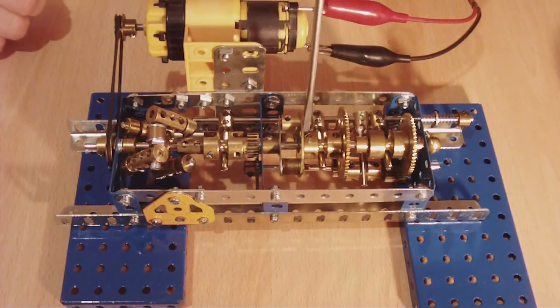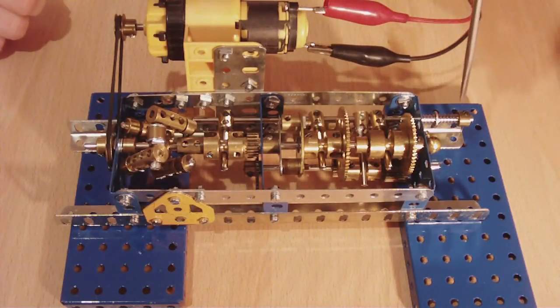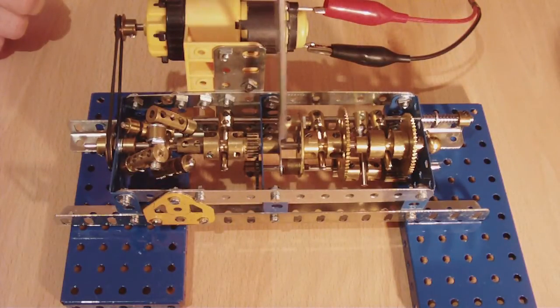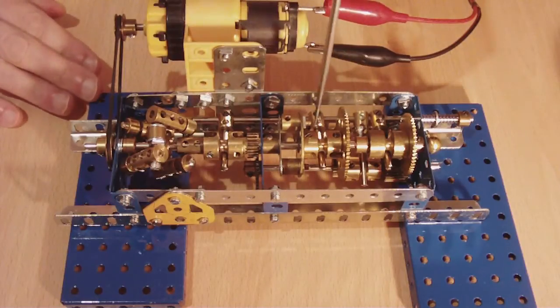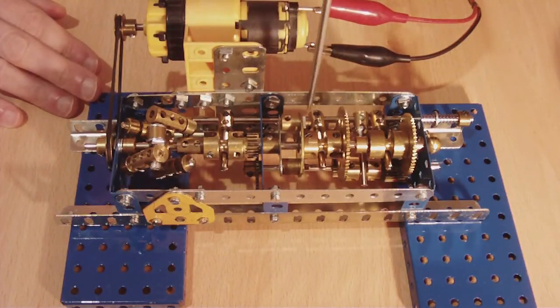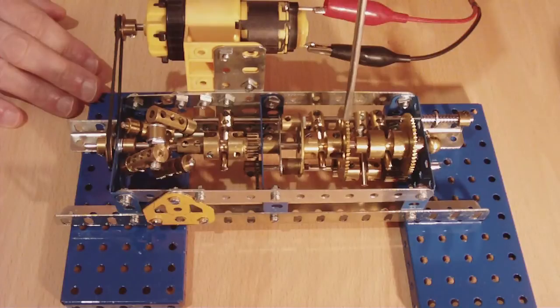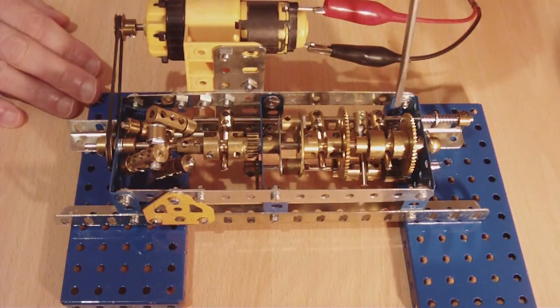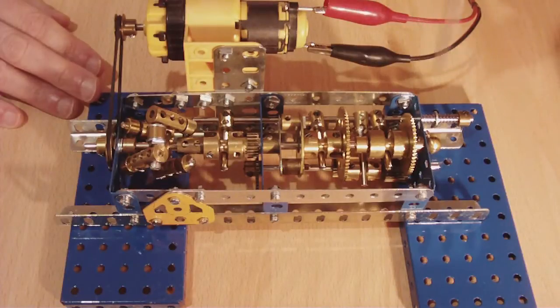At very low speeds it doesn't drive the output at all because this dog clutch arrangement doesn't engage. But as it speeds up that dog clutch engages for low gear, that's off this gear wheel. When it speeds up even more it goes into high gear and two things happen.